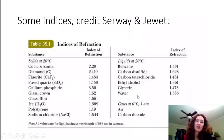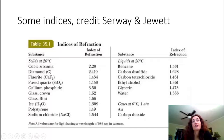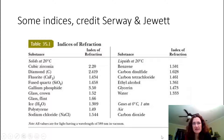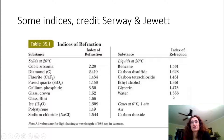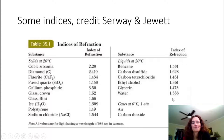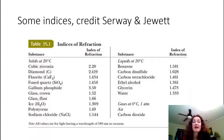Indices of refraction are always greater than or equal to one. One is the index of refraction for a vacuum; for air it's about 1.0003 — very close to vacuum. Water has an index of refraction of about 1.33, and glass is about 1.5. Remember that when the index of refraction changes, it changes the speed of light within that medium according to V = c/N.